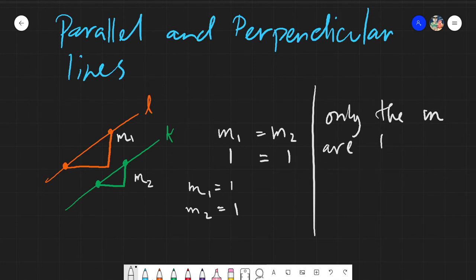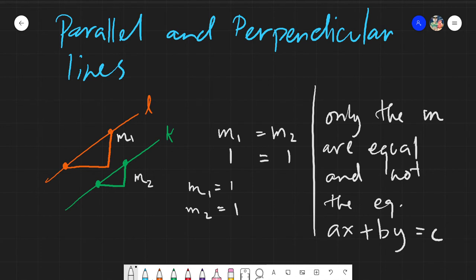Only the slopes are equal, and not the equation. And of course, let me just remind you, the equation of the line would be denoted as the standard form AX plus BY equals C.